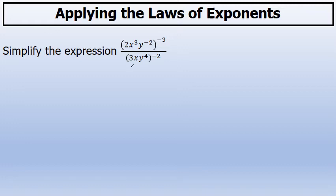One way to solve the problem would be to take the power of negative 3 in the numerator and apply it to every factor inside of the parentheses.